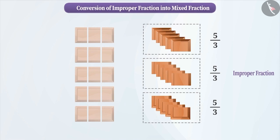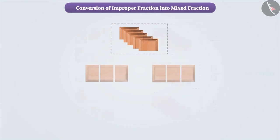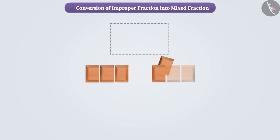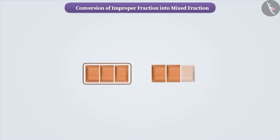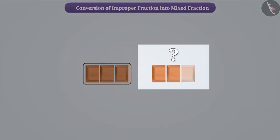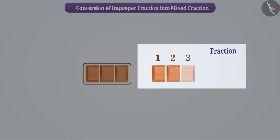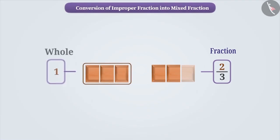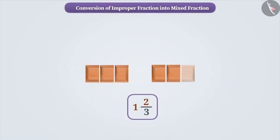Let's convert it into a mixed fraction. If we take 3 parts from the total 5, then we will get 1 whole chocolate. Now find the fraction for the remaining part of the chocolate. Since we are left with 2 parts out of 3, therefore the fraction is 2 by 3. This way, a whole chocolate and 2 by 3 chocolate can be expressed together as 1 and 2 by 3.